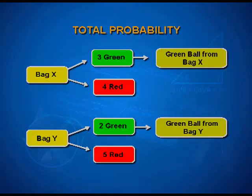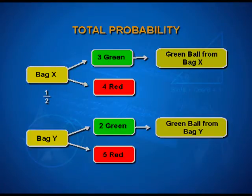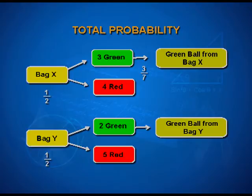What is the probability of bag X getting selected? Considering bag X and bag Y to be equally likely to be selected, the probability of bag X is 1/2 and the probability of bag Y is also 1/2. Getting a green ball from bag X is 3/7 because there are 3 green balls and the total number is 7, whereas for bag Y it is 2 green balls out of a total of 7, so 2/7.